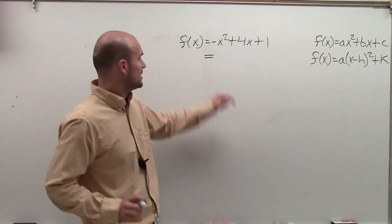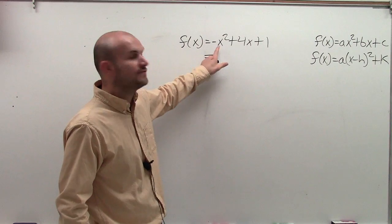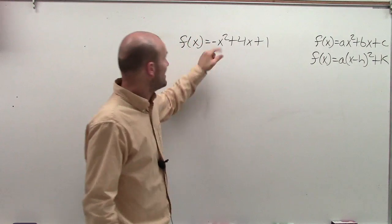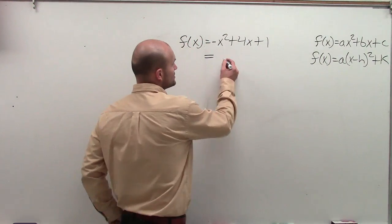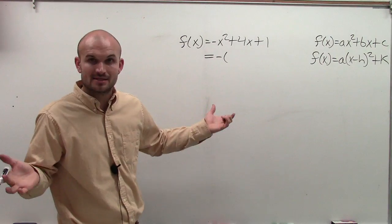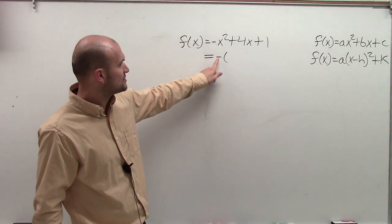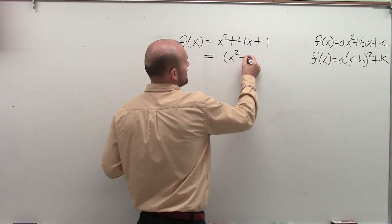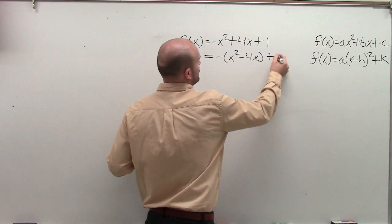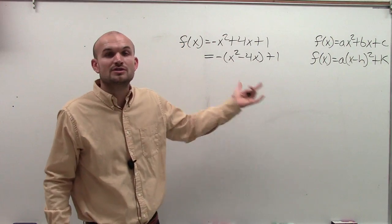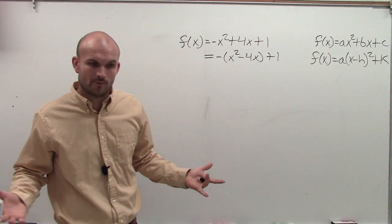Before I can complete the square, I have to make sure that the coefficient of my squared variable, which is my x squared, is 1. Right now, I have it as negative 1. So what I'm going to do is I'm going to divide out a negative 1, which I'm just going to represent as the negative sign. So I'm dividing out my negative 1. That's going to leave me with x squared minus 4x plus 1. I only want to divide out of my first two terms, because that's what I'm going to use to create my perfect square trinomial.